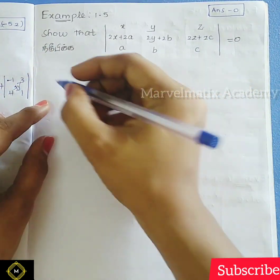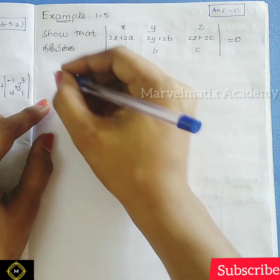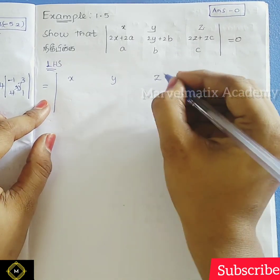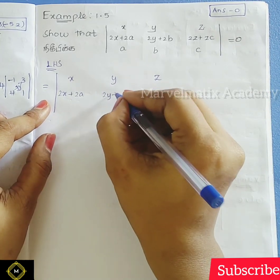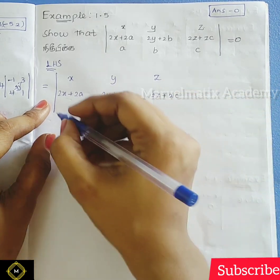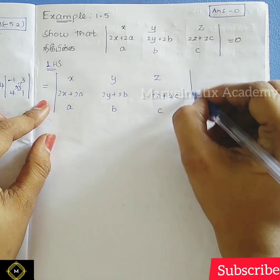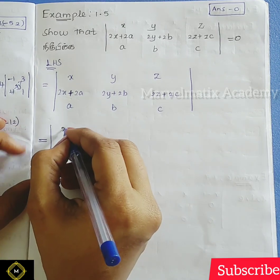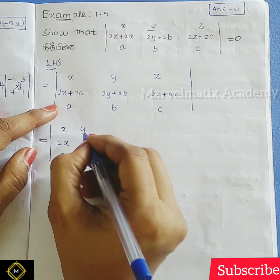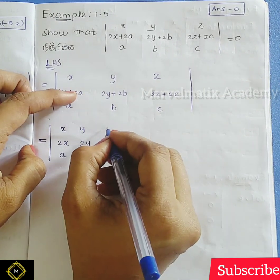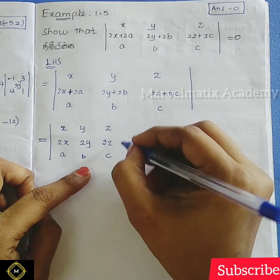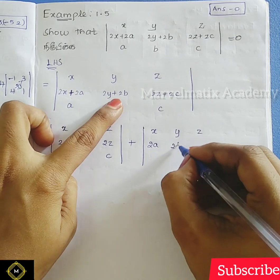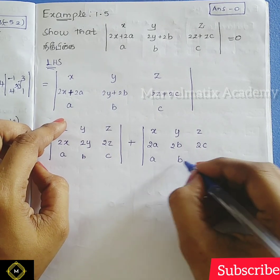So we will take a look. First, we have the left-hand side. The determinant of x, y, z; 2x plus 2a, 2y plus 2b, 2z plus 2c; 2a, 2b, 2c and a, b, c. This is the addition.